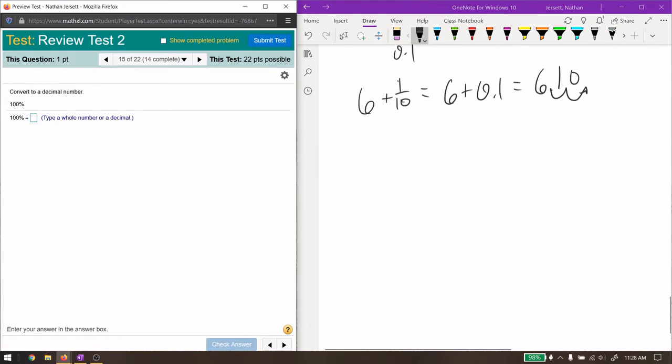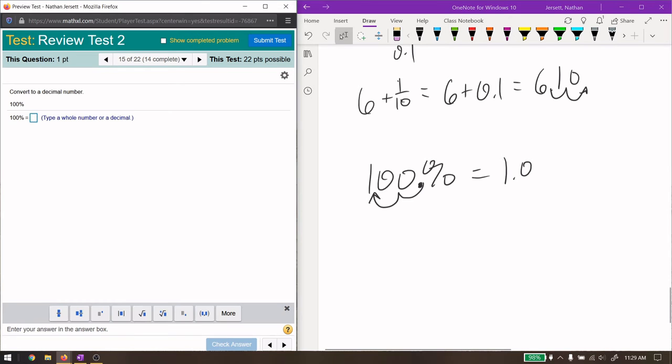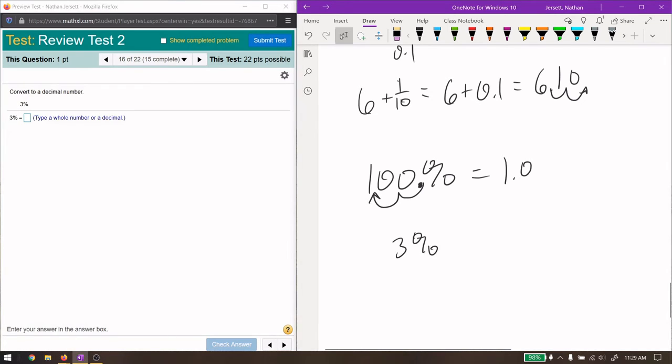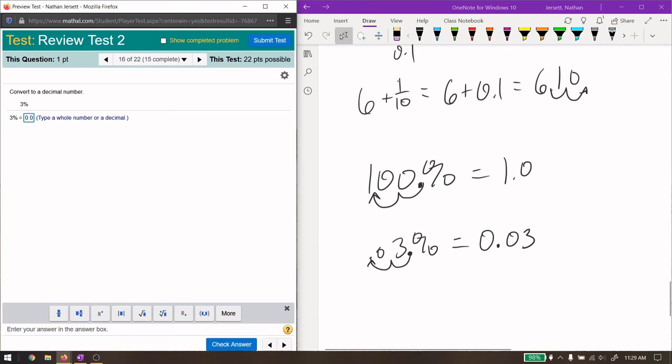Going from a percentage to a decimal is very simple. Find the decimal point, which if it's not written there is at the end, and move it two spaces the other way. So 100% becomes 1.0, which is just 1. For 3%, the decimal is right there, and move it back two spaces, add a zero. It's always a good idea to have a zero in front of the decimal point when there's nothing there, so it's clear to the reader.